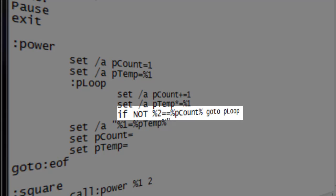To decide if the loop should run again, we compare the counting variable to the second parameter, or the power. If they are not the same, we run the loop again.